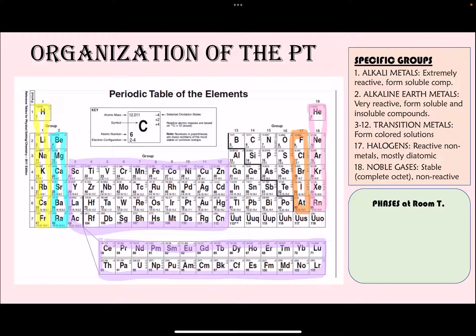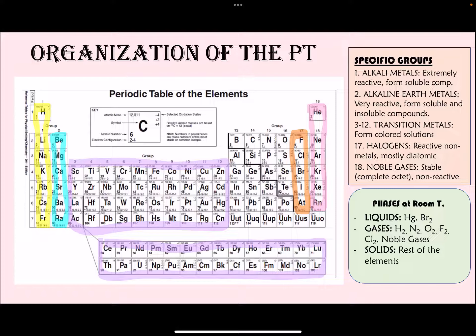Let's talk about phases of elements at room temperature. There are only two liquids: mercury and bromine. The elements that are gases at room temperature include all noble gases, plus hydrogen, nitrogen, oxygen, fluorine, and chlorine. Whatever elements are left after accounting for the liquids and gases are all solids at room temperature.